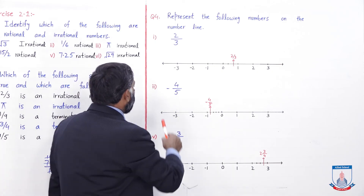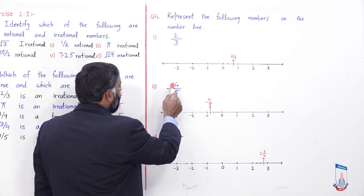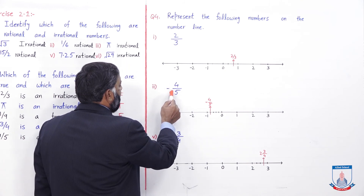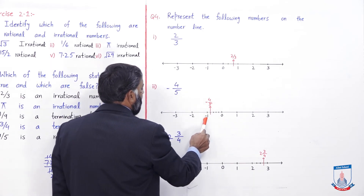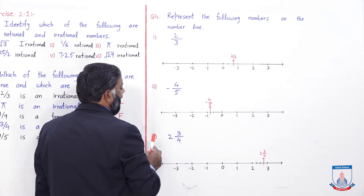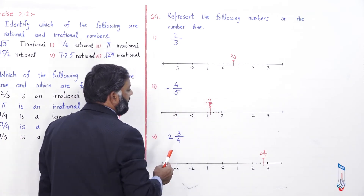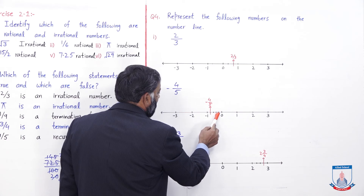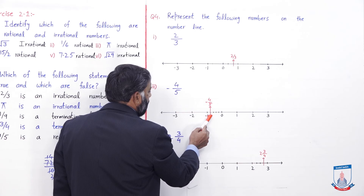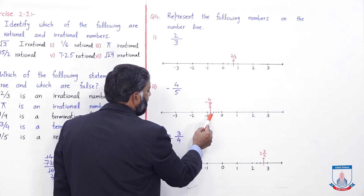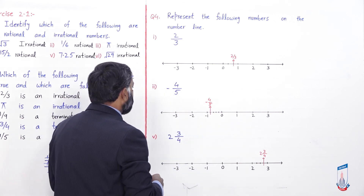دوسری value: −4/5 — یہ negative ہے اور 4 چھوٹا ہے 5 سے، لہذا یہ 0 اور −1 کے درمیان ہوگی۔ Denominator 5 ہے تو 0 اور −1 کو 5 equal parts میں divide کریں: 0/5، −1/5، −2/5، −3/5، −4/5، −5/5۔ −4/5 کو mark کر دیں — یہ number line پر represent ہو جائے گا۔